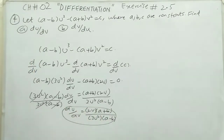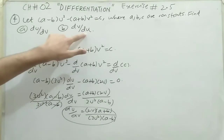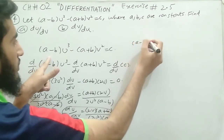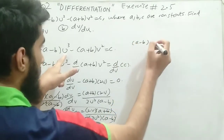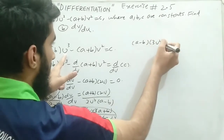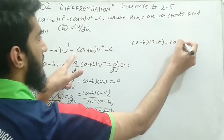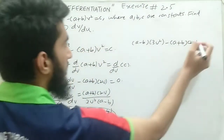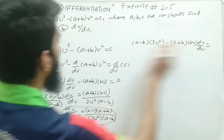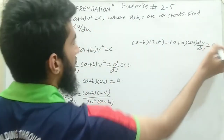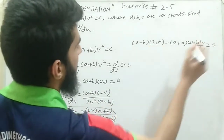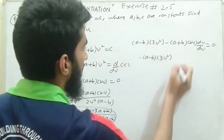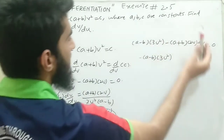Now we are going to find dv/du, so we differentiate both sides with respect to u. Taking the derivative with respect to u: (a minus b) is a constant, brought outside, times the derivative of u cubed which is 3u squared, minus (a plus b) times the derivative of v squared which is 2v, and since v is the inner function we write dv/du. This equals the derivative of constant c, which is zero.